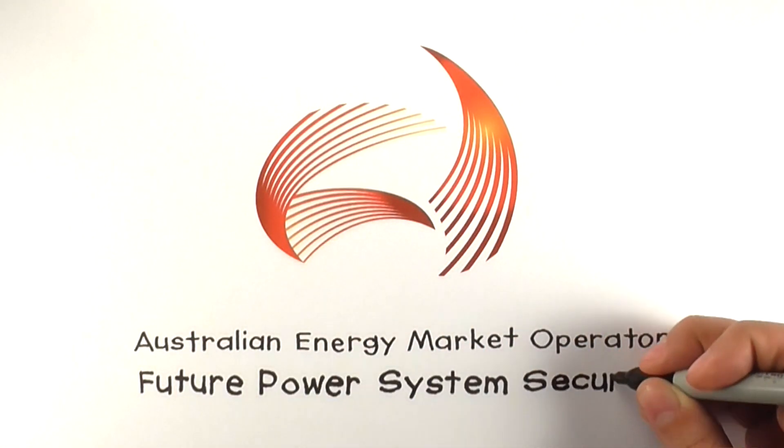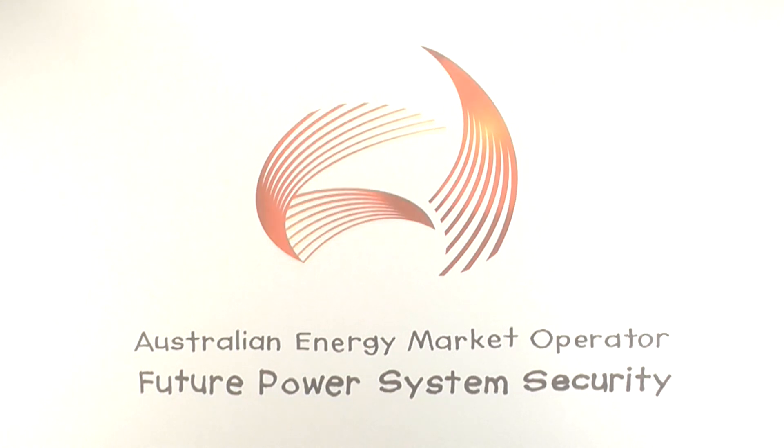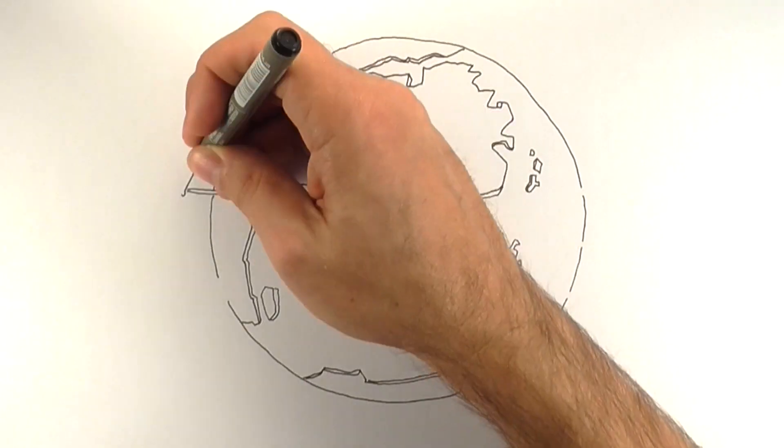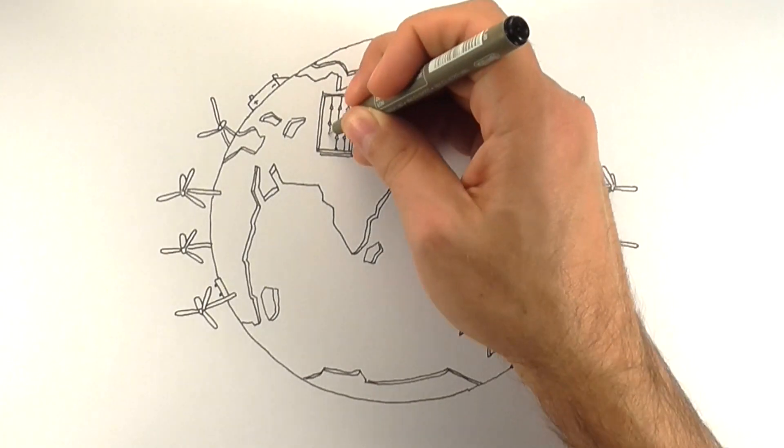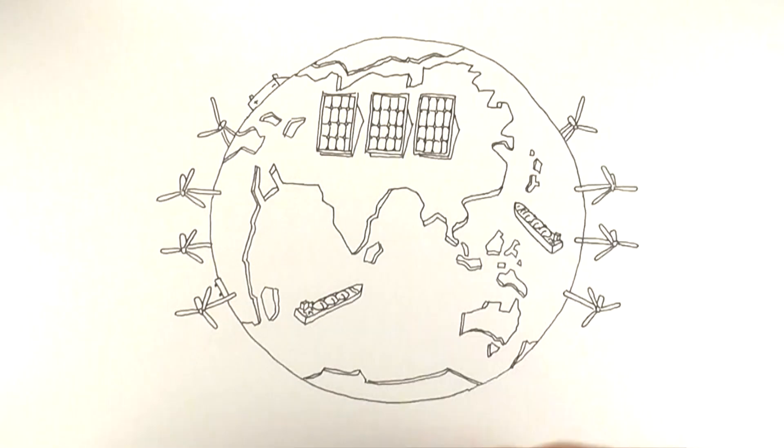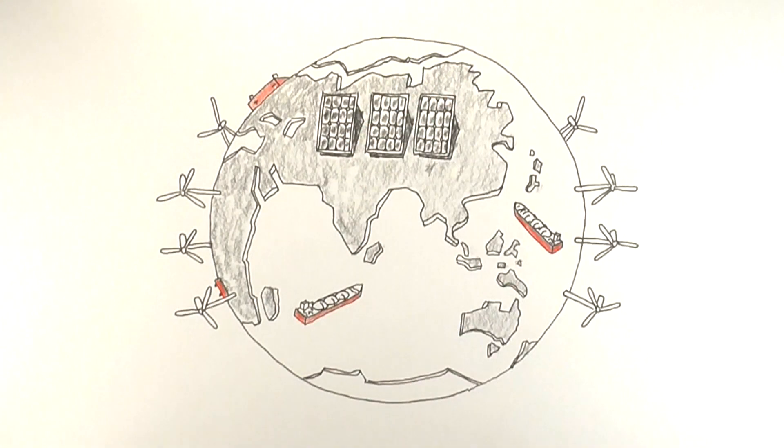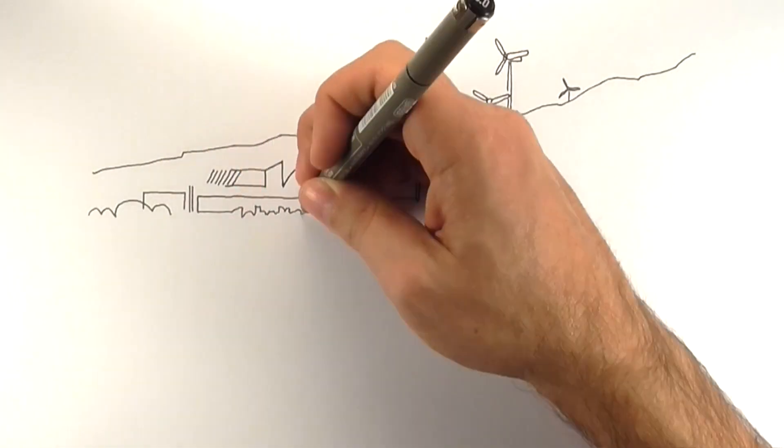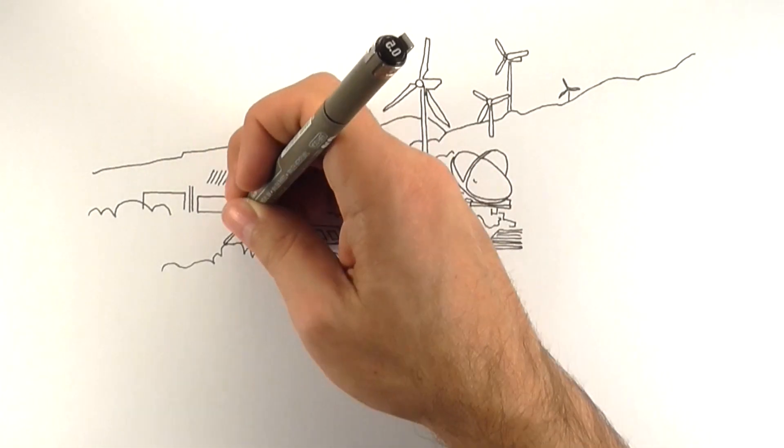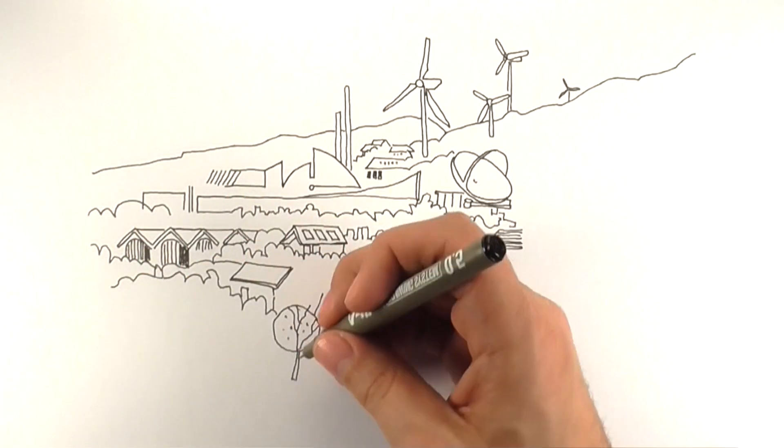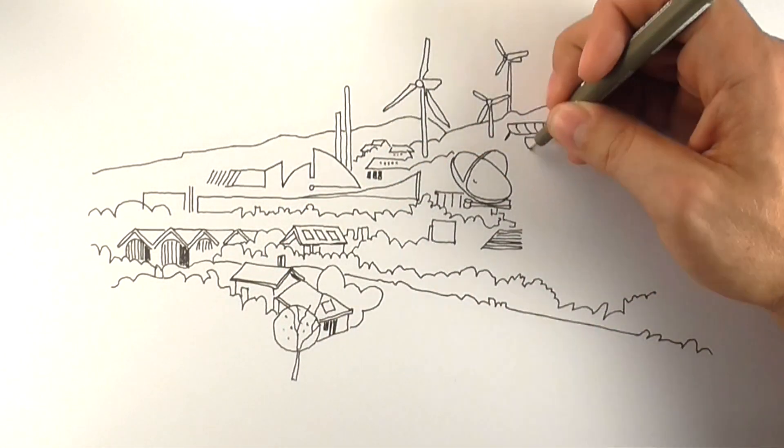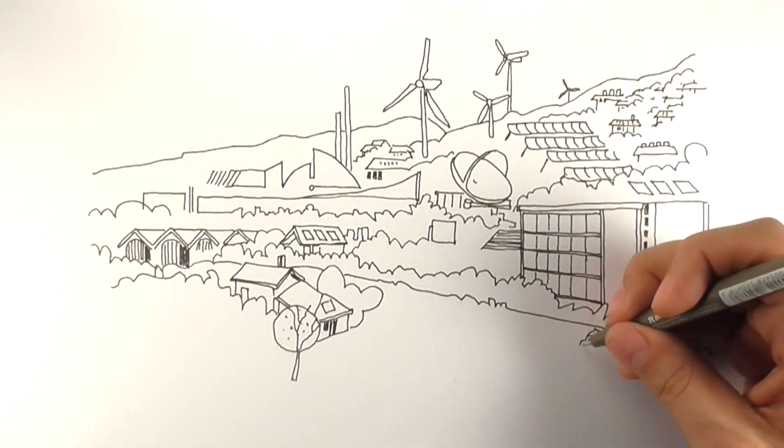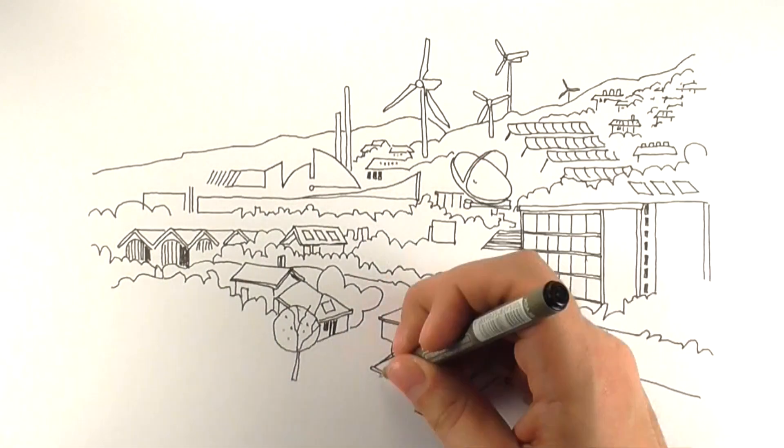Future power system security. Like many other major power systems around the world, Australia's electricity industry is rapidly transforming. This has been driven by the transition to lower emissions generation, the rise of rooftop solar PV and large-scale wind generation, as well as new technologies and changing consumer behaviors.